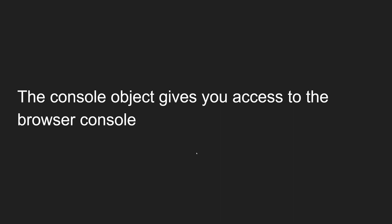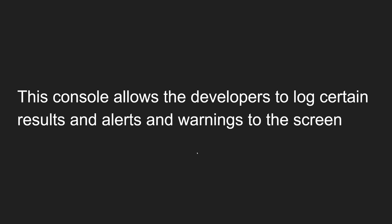We have seen about the console object. In the browser console we have written console.log, console.dir — like this we have used it. So the console object gives you access to the browser console. The console is an object and in this object you have methods and properties like log and dir.